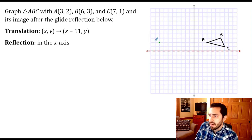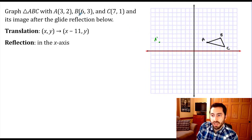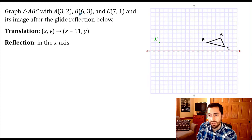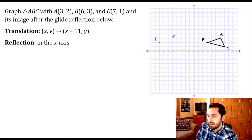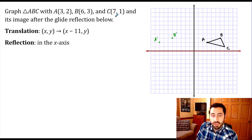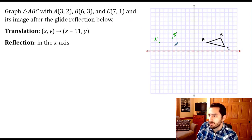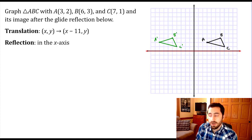We can count this out on the graph or do it algebraically. For point B, the x-value is 6; subtracting 11 gives negative 5, so B prime is at (−5, 3). For point C, the x-value is 7; 7 minus 11 gives negative 4, so C prime is at (−4, 1). That completes our translation — we slid the triangle 11 units to the left.